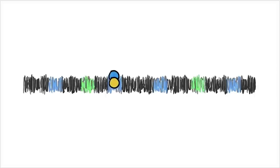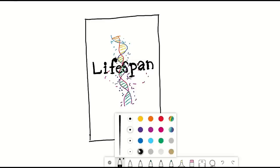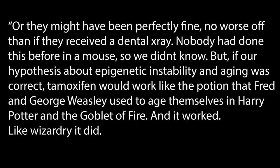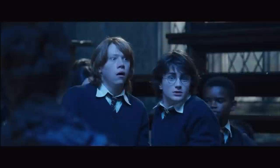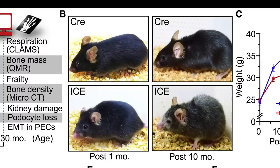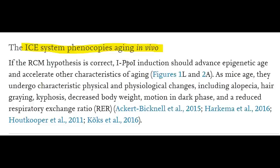So what happened? I first learned about their results back in 2019 when I read David's book, where it says the mice might have died, they might have grown tumors, or they might have been perfectly fine — no worse off than if they received a dental x-ray. Nobody had done this before in a mouse, so we didn't know. But if their hypothesis on epigenetic instability and ageing was correct, tamoxifen would work like the potion that Fred and George Weasley used to age themselves in Harry Potter and the Goblet of Fire. And it worked. The mice that received tamoxifen for three weeks in four- to six-month-old mice do look much older and performed worse in memory tasks. At 10 months post-treatment, these ICE mice exhibited classic features of old age, including reduced body weight and fat mass independent of food intake, a lower respiratory rate during the day, and decreased motion in the dark phase.